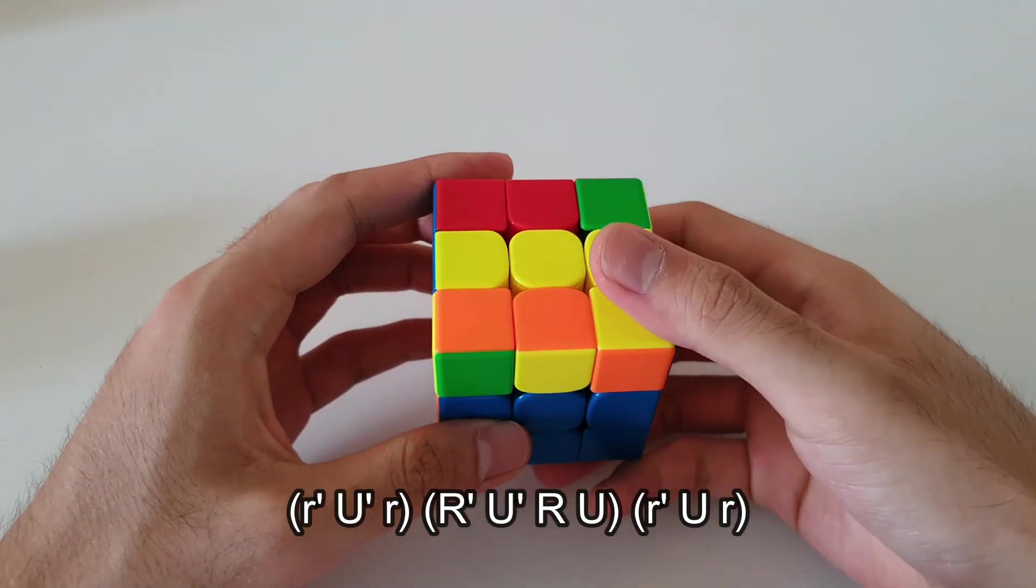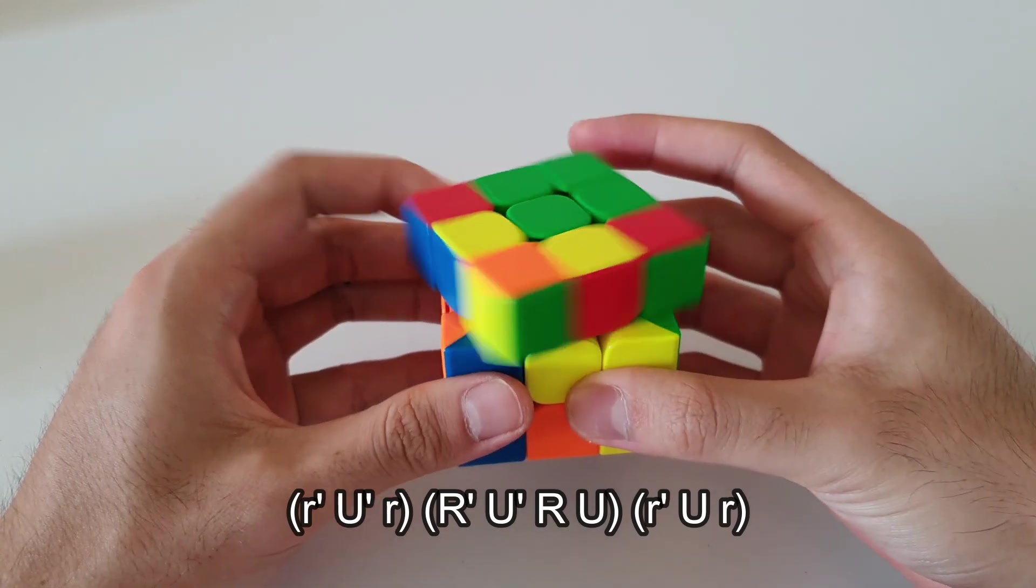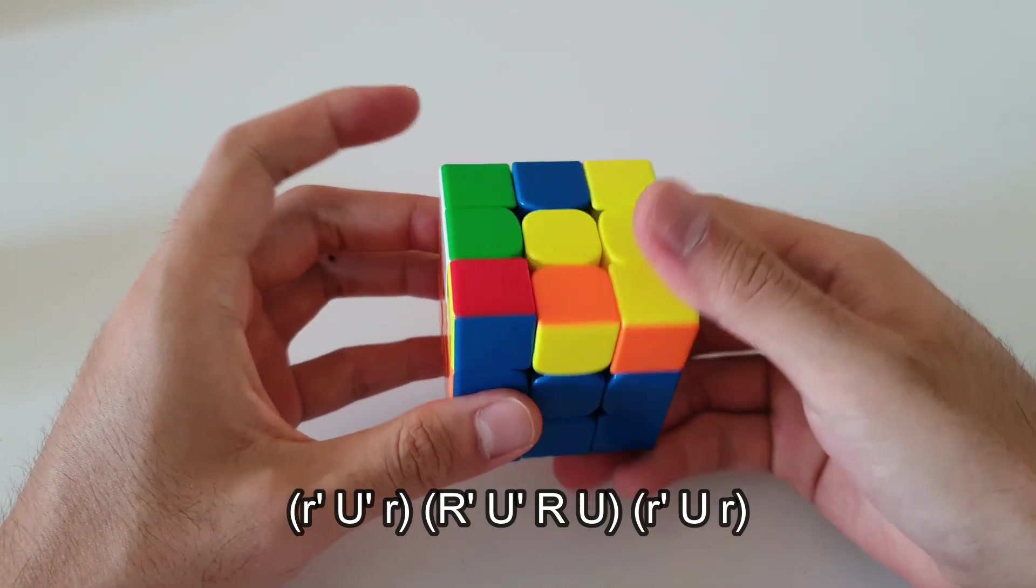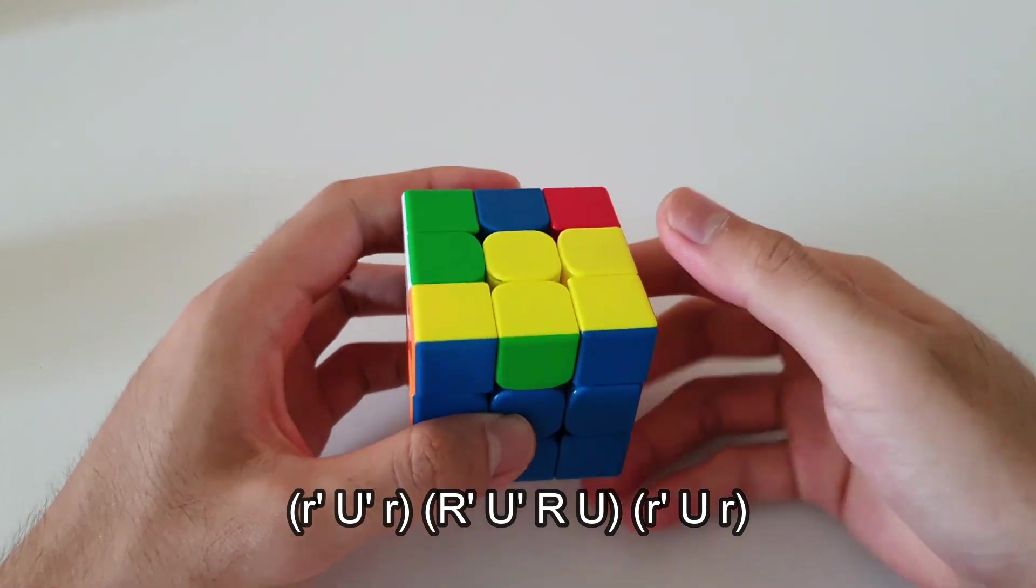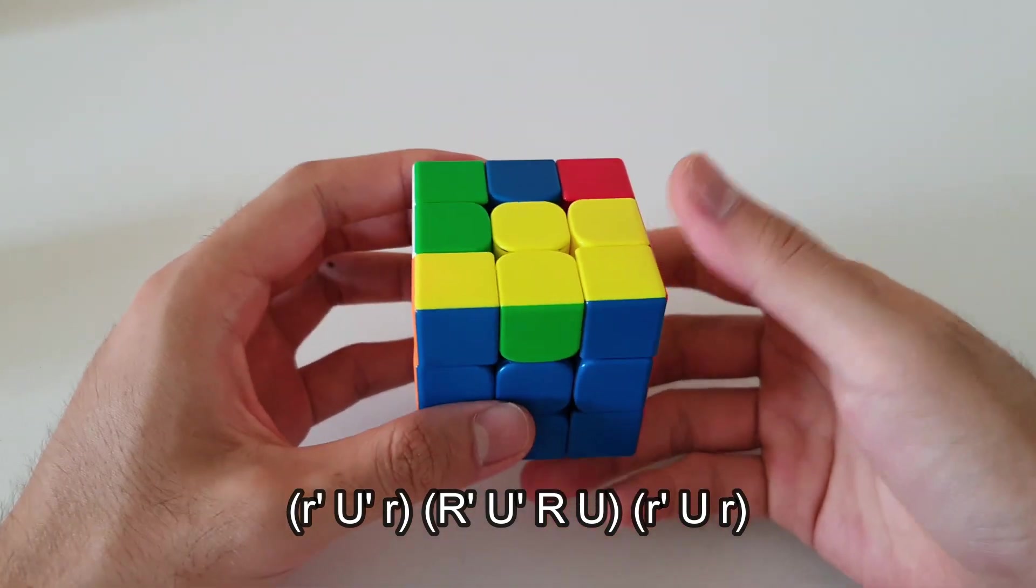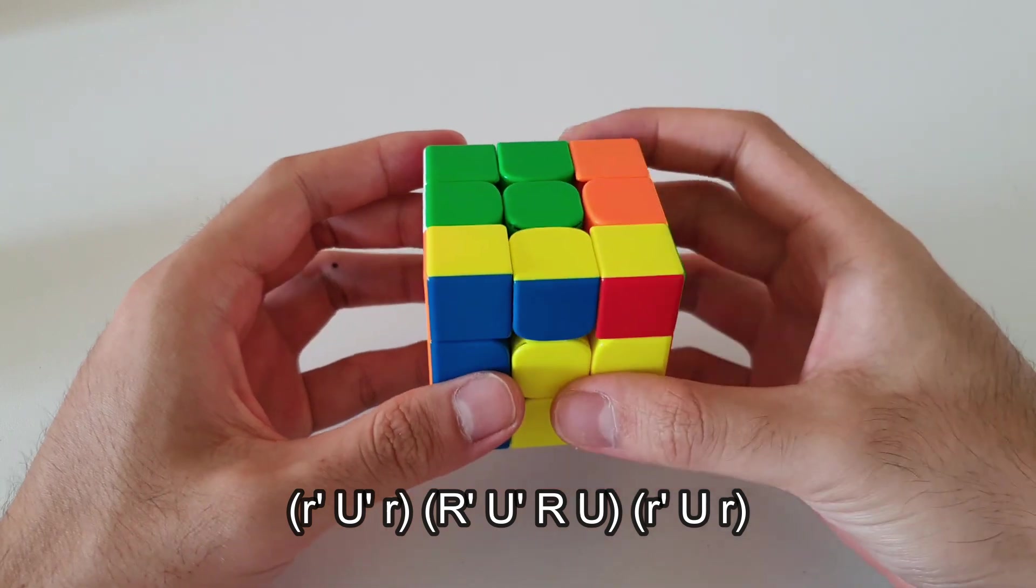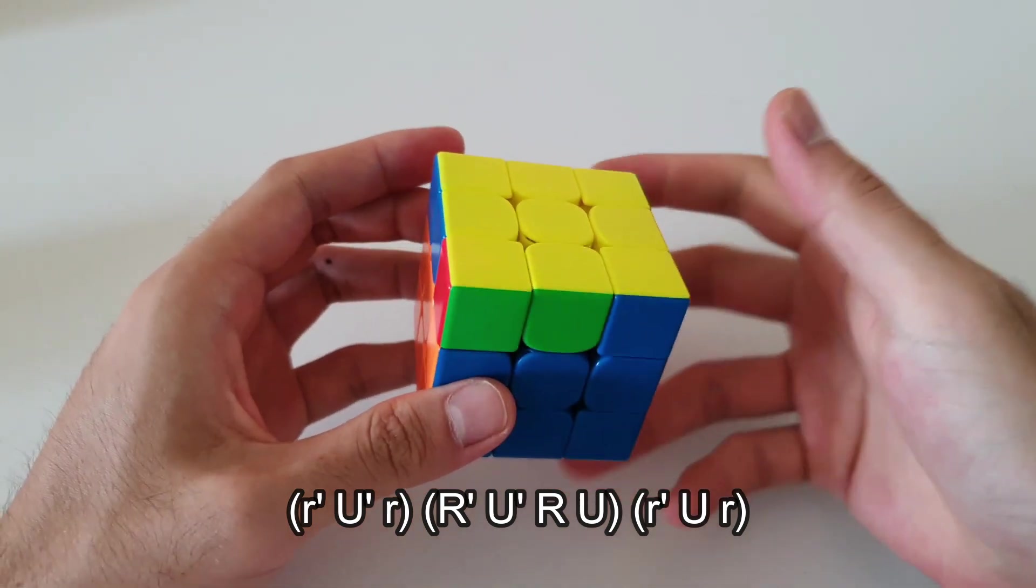We want to start the algorithm off with a wide R' U' wide R. Following that R' U' R U, that's just sexy from the back right corner, and then finally wide R' U wide R.